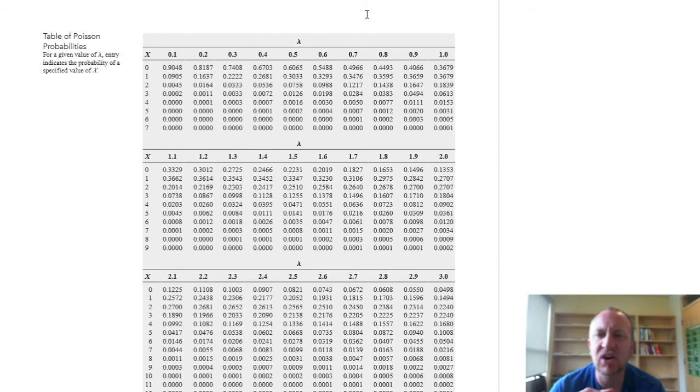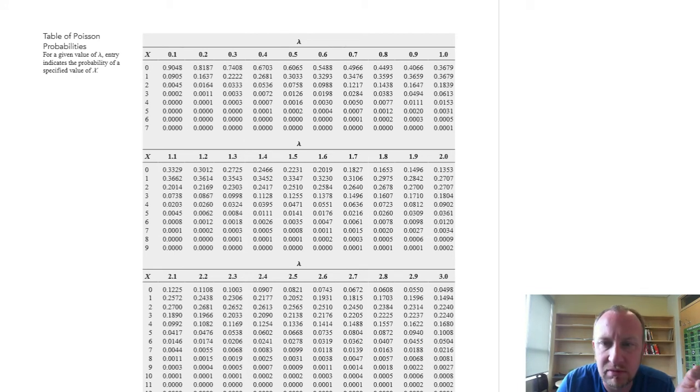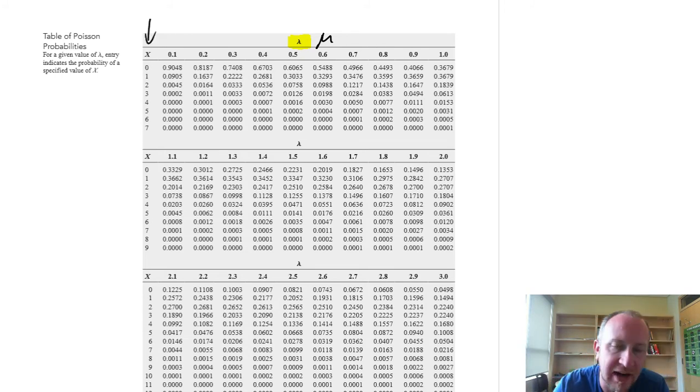And I have all of the probability, well, a lot, most of the relevant probabilities that correspond to a wide range of variances of this distribution, of this probability distribution. Now, the only difference between what I'm writing and what you'll see here, a slightly different notation. This table uses lambda, where I'm using mu, so that's our mean. And here, these are our x values.